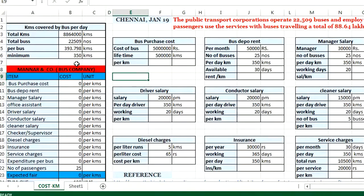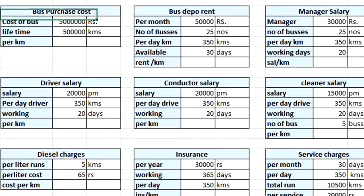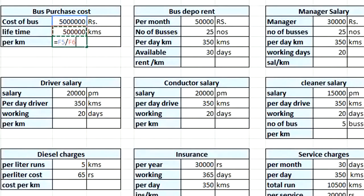Now let us calculate the bus cost. The cost of the bus is ₹50 lakhs and the lifetime is 5 lakh kilometers, after which the bus will be destroyed and its value is zero. So cost per kilometer = ₹50 lakhs ÷ 5 lakh km = ₹10 per kilometer.